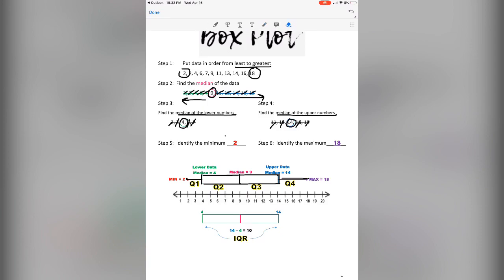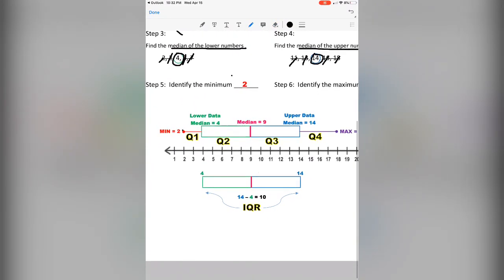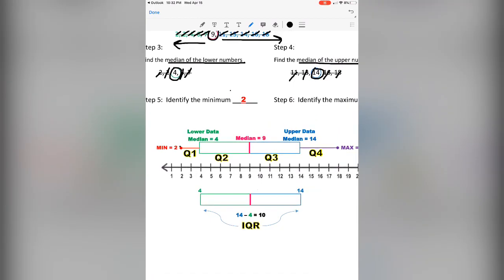The inner quartile is the part where the data is located inside this box. This is 50% of the data, and we call this the IQR, which is the inner quartile range. Range, remember, means the distance, or we subtract from one number to the next. Inside this, we go from 4 to 14, so the range is 10.